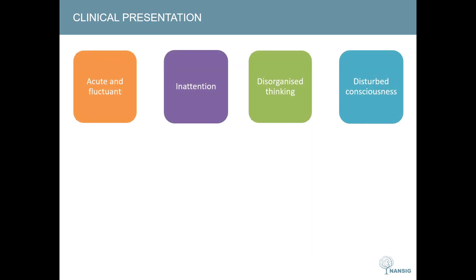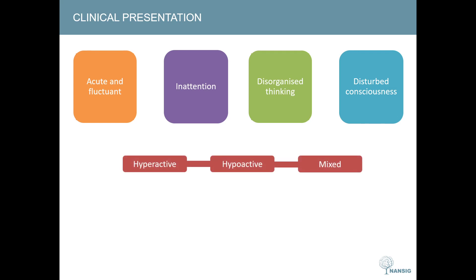Delirium has four key features. The first is an acute onset with a fluctuating nature. The second is inattention — was the patient having difficulty focusing, being easily distractible, or having difficulty keeping track of what was being said? Third is disorganized thinking — was the patient's thinking incoherent, rambling, or switching unpredictably from subject to subject? Finally is disturbed consciousness, which can present as hyperactive — agitated and nervous — hypoactive — lethargic and sleepy — or a mixed picture combining both.